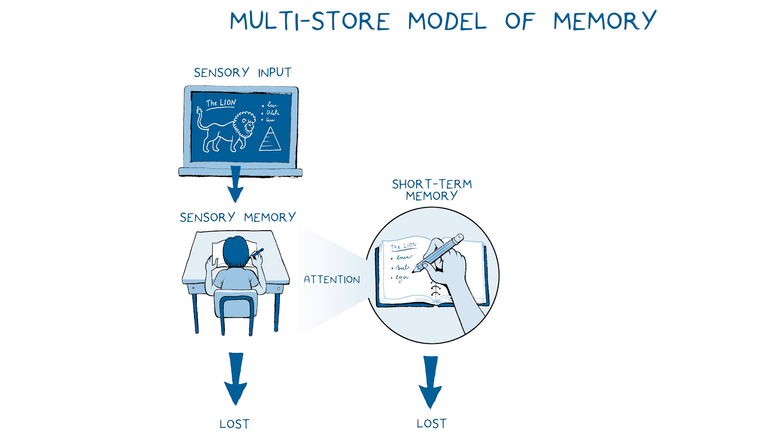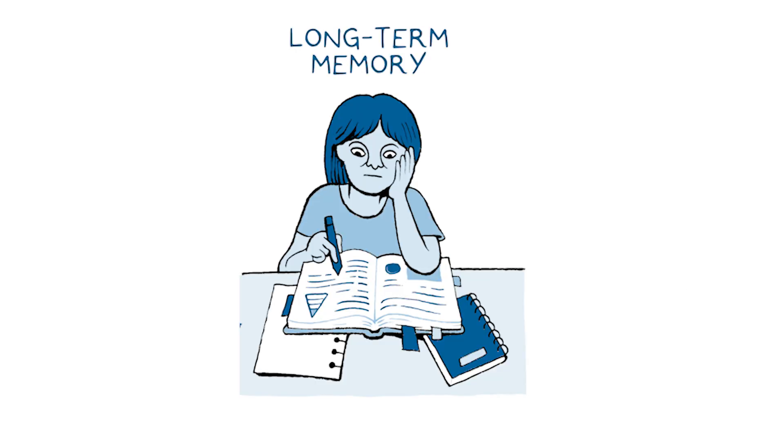Next, depending on how the information is processed in short-term memory, it may or may not be moved into long-term memory for storage. An important set of questions we will be addressing throughout this course is: one, how can we help our students make memories that are enduring and durable? And two, how can we help our students make memories that can be transferred to new situations later? Now let's look in more detail at how the different components of this model of memory work together and interact.